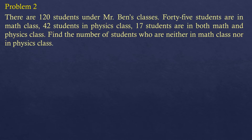Let's try to solve another problem. There are 120 students under Mr. Ben's classes. 45 students are in math class, 42 students in physics class, and 17 students are in both math and physics class. Find the number of students who are neither in math class nor in physics class.